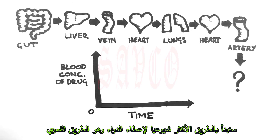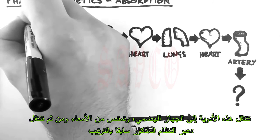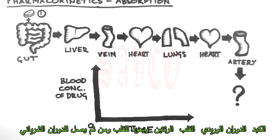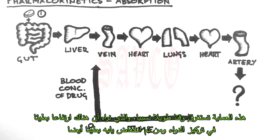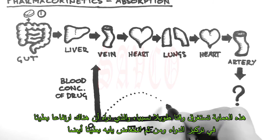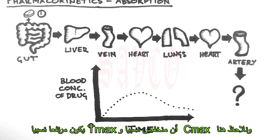We'll begin with the most common route of drug administration, which is orally. These drugs move through the digestive system and get absorbed by the gut, then move through the liver, the venous circulation, the heart, the lungs, back to the heart and then to the arterial circulation. This takes quite some time, so what we see is a slow rise in the blood concentration and then a slow fall. Note that the C-max is quite low, and the T-max is quite large.